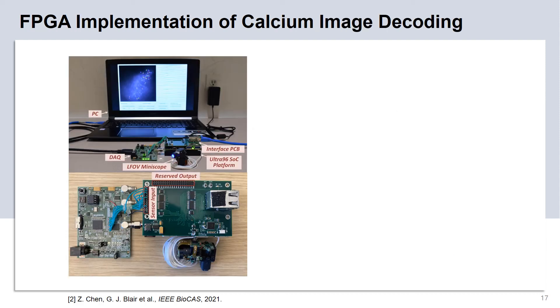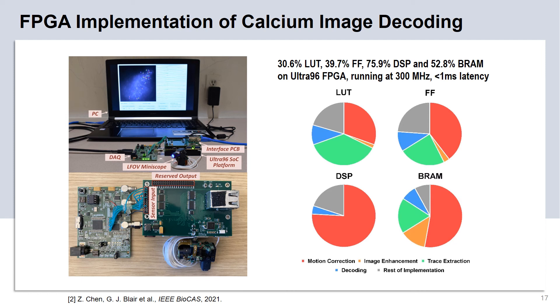This photo shows the hardware and user interface setup for the real-time calcium image processing and decoding implementation. Our CNN-based calcium image decoding implementation consumes 30% LUT, 40% flip-flop, 75% DSP, and 50% BRAM on the Ultra96 FPGA device. The figure on the right shows the breakdown of hardware usage among accelerators in our implementation. The FPGA implementation runs at 300 MHz, and under this frequency, the latency for the calcium image decoding is less than 1 millisecond.